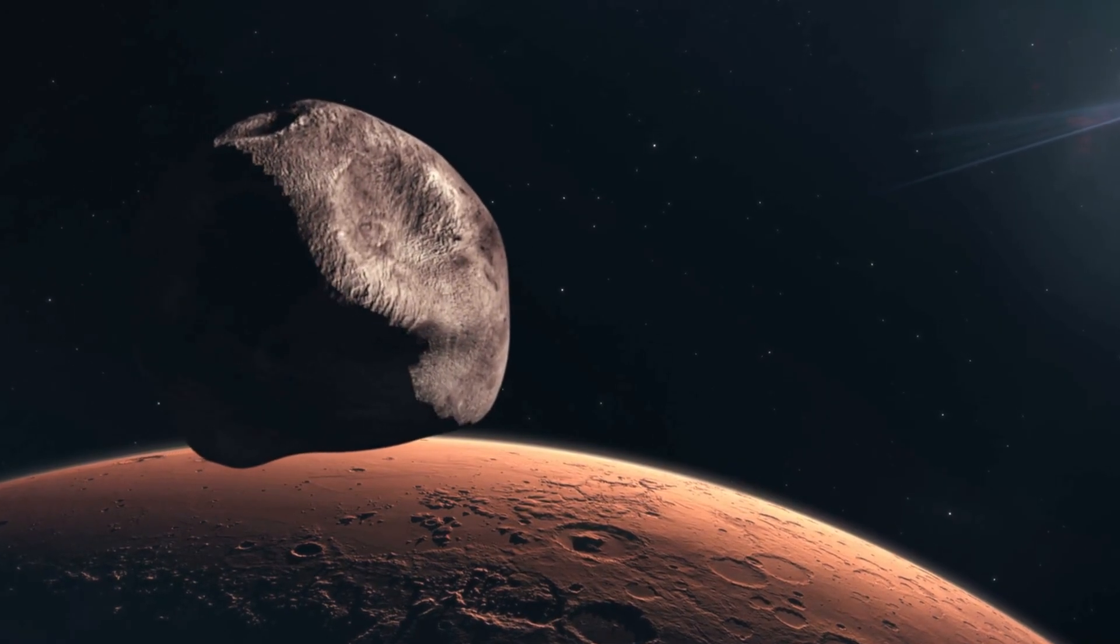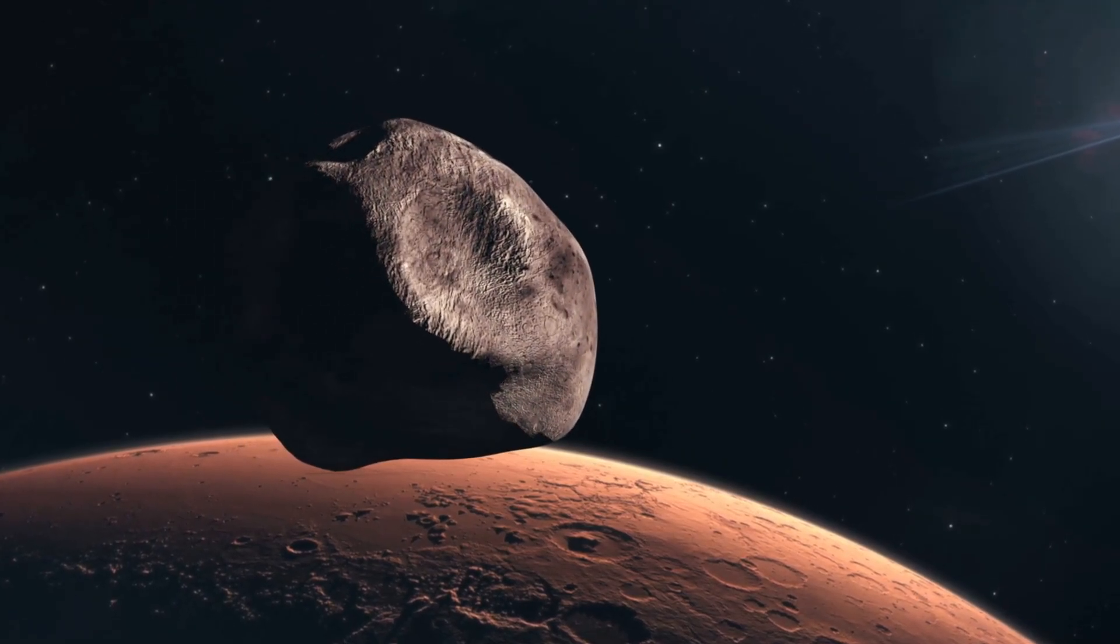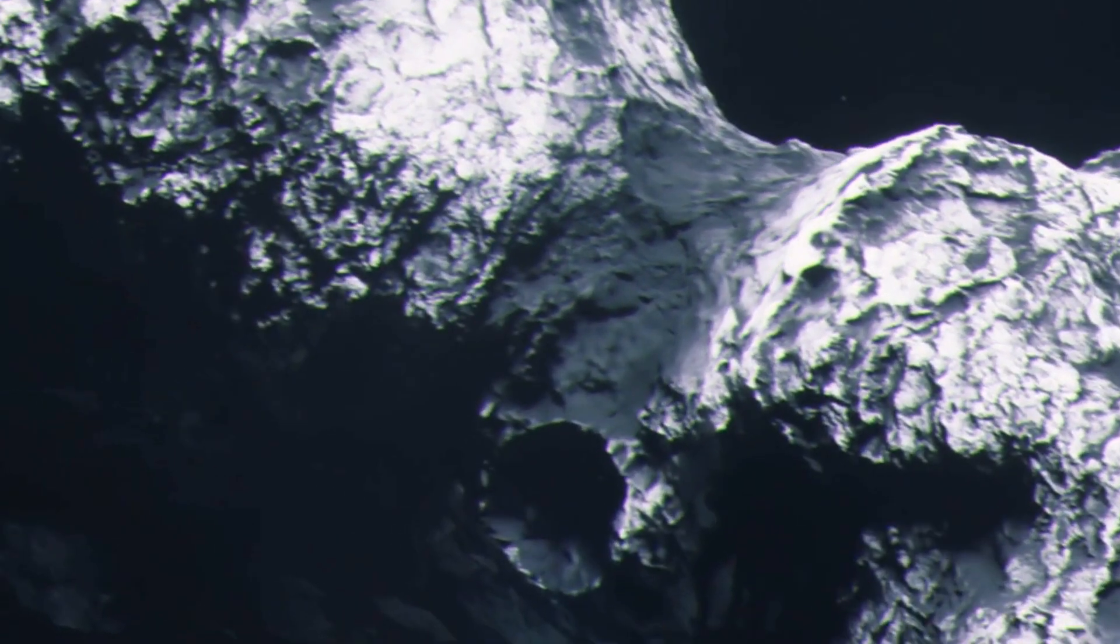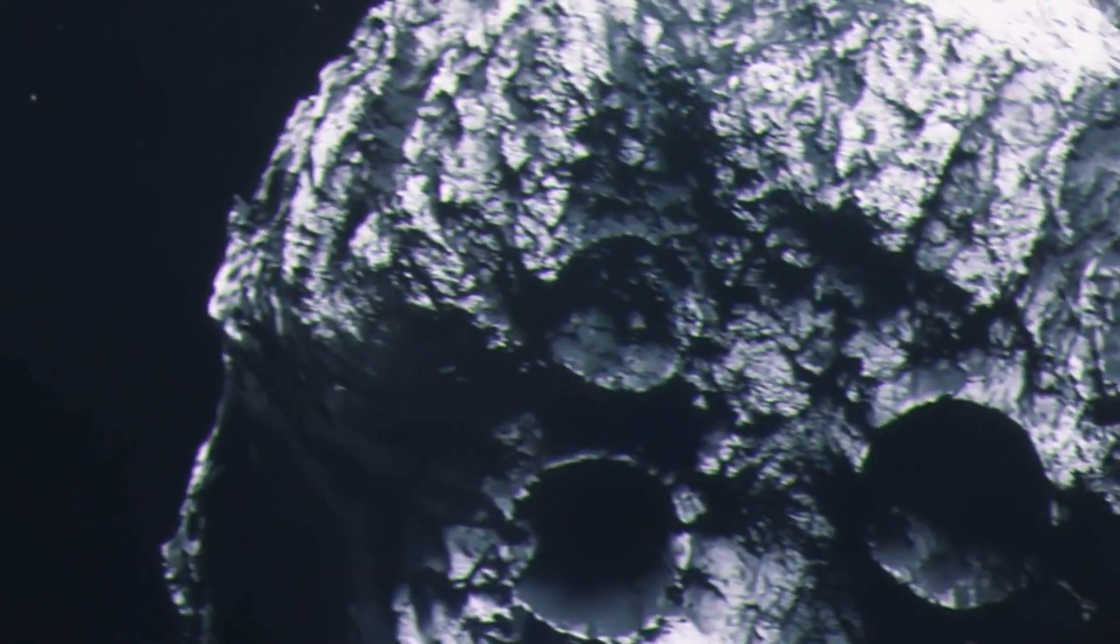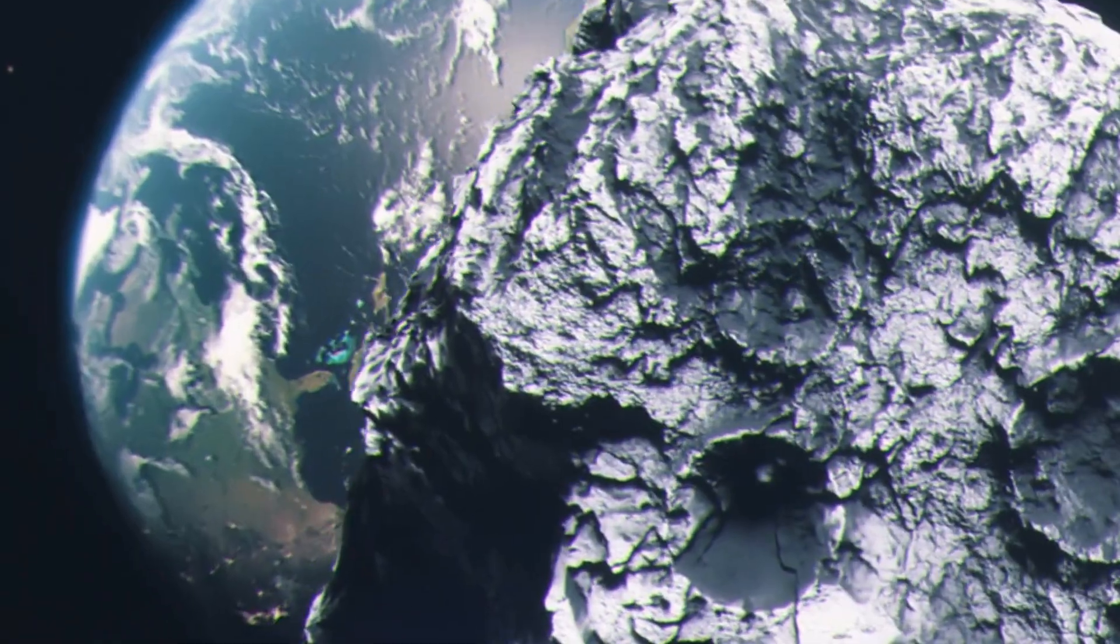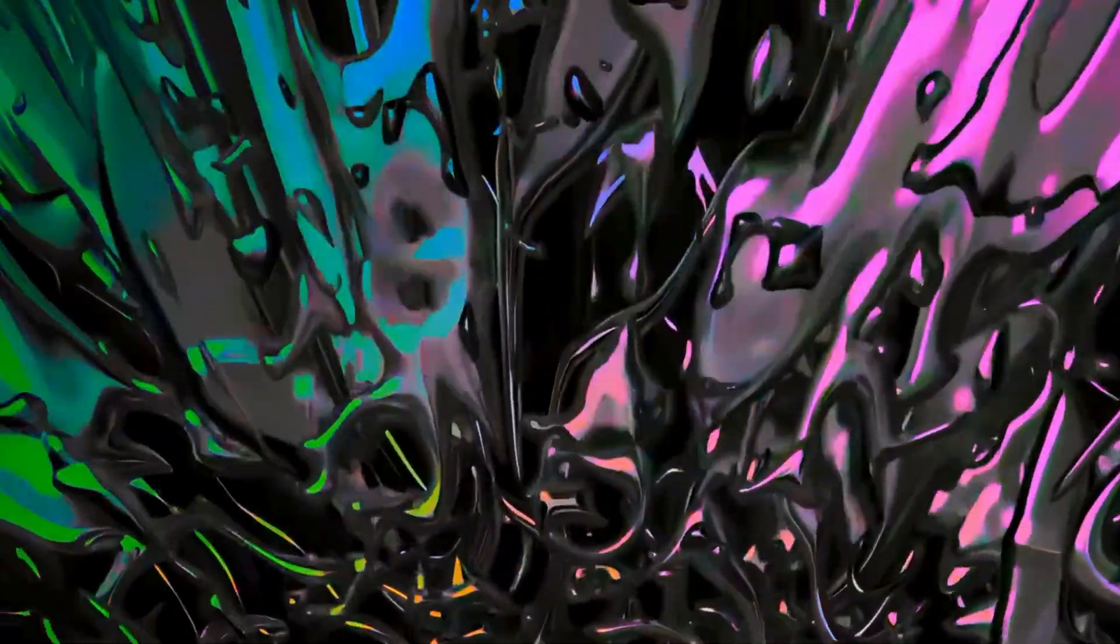By late September, as it passed Mars' orbit at 1.5 astronomical units, the comet flipped the script, releasing massive amounts of water vapor, like a fire hose at full blast, far more than expected. It also started shedding metals, another oddity.